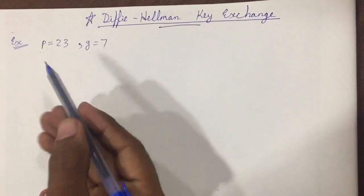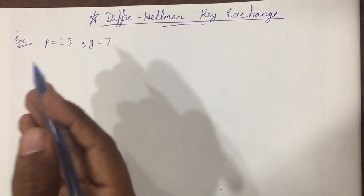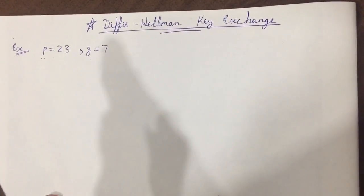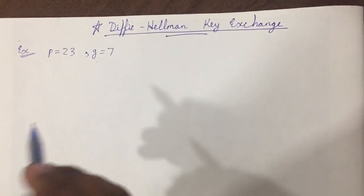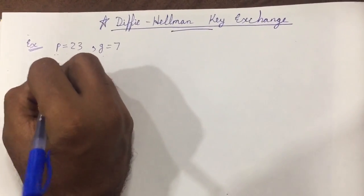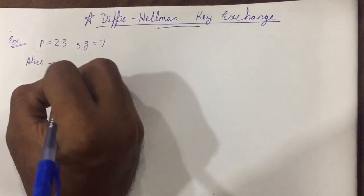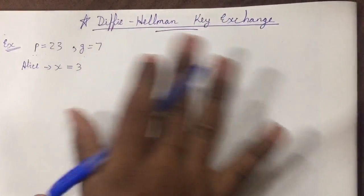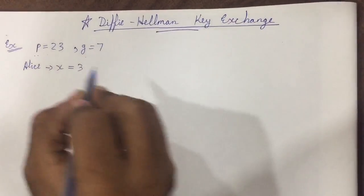Now what we have to do is generate random numbers x and y. x is for sender and y is for receiver. So here let us take sender as Alice. His corresponding value x, let us take it as 3. You can take any random numbers, but keep in mind that those random numbers should be different.